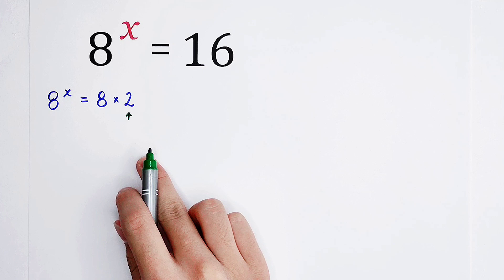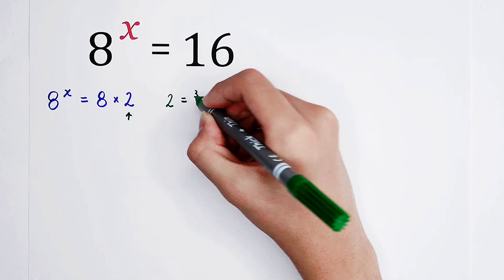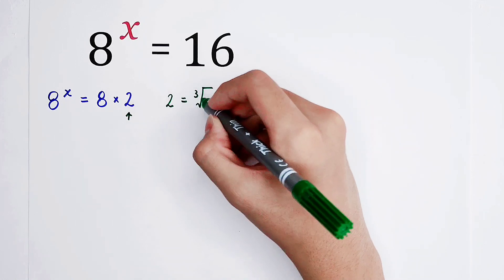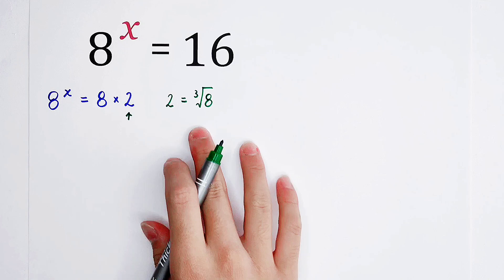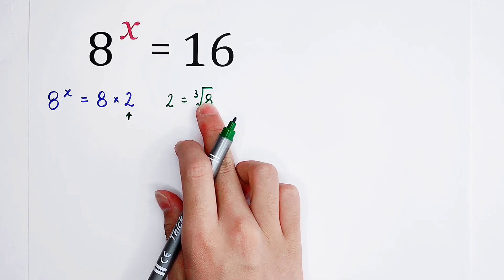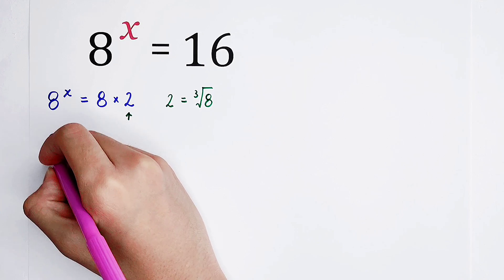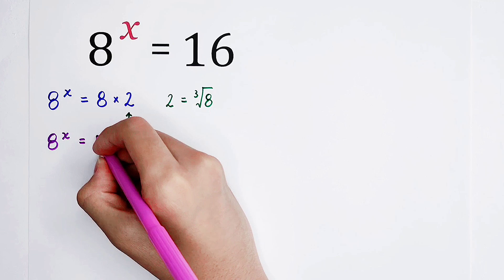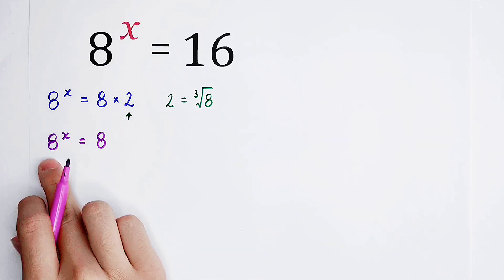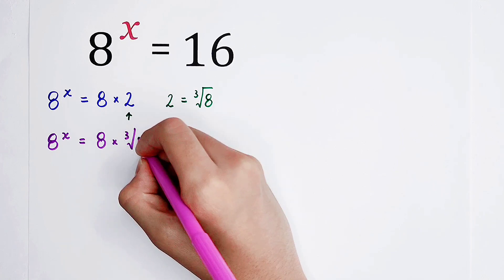We don't like it. So note that 2 is equal to the third root of 8. So we can substitute the third root of 8 for 2. So now, this equation turns to this form.